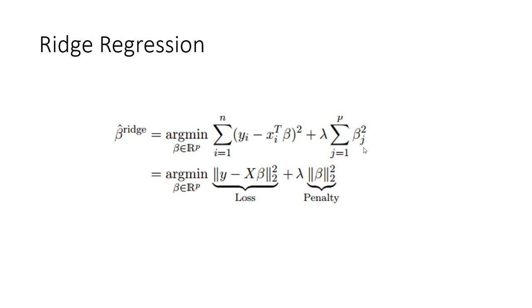The second term is lambda times the summation of beta squared, where beta is the coefficients. This is added to the least square term in order to shrink the parameters to have low variance or standard variance.